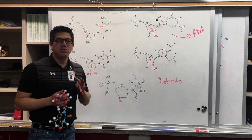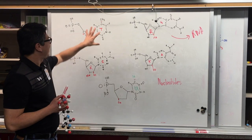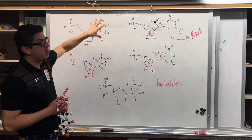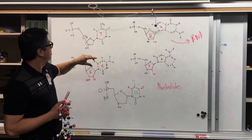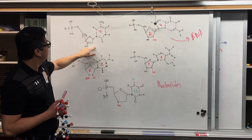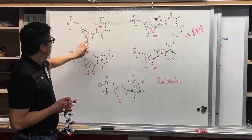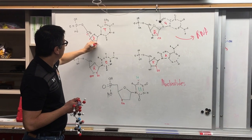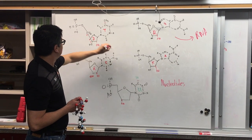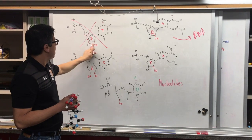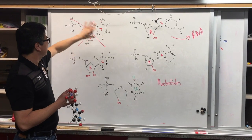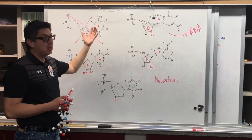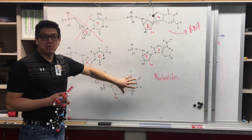The final nucleotide we need to discuss is the thymine nucleotide. Thymine looks like this — we went over its structure in class. The thing is, this is a DNA nucleotide only. Thymine does not exist as an RNA nucleotide — that does not occur. So what are we going to use to replace thymine in RNA? That's where uracil comes in.